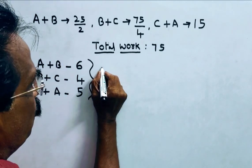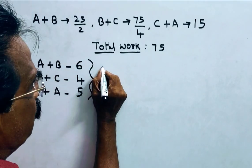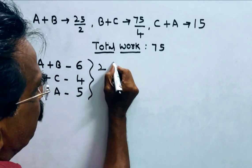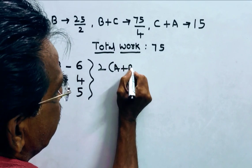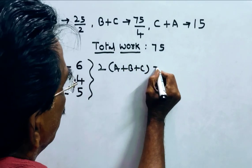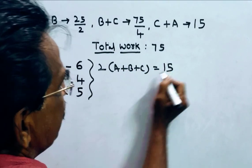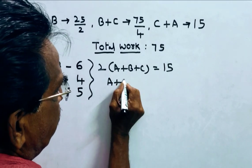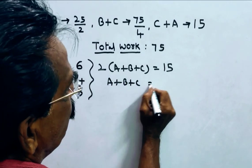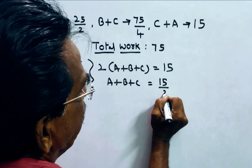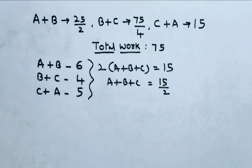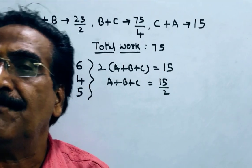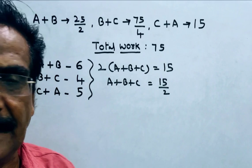By adding these three, these three, 2 into A plus B plus C, 2 into A plus B plus C is equal to 15 units, whereas A plus B plus C is equal to 15 by 2, 15 by 2 units per day. A plus B plus C can do 15 units of work per day.